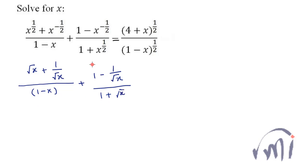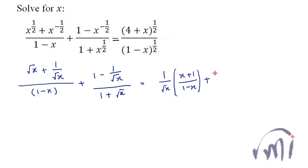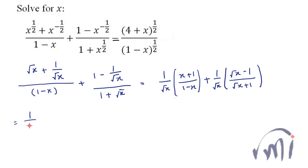So first I am going to simplify this term. This can be written as if I simplify the numerator, I'll get 1 by root x common and inside the bracket I can write x plus 1, divided by 1 minus x. Then we have this plus sign, and now we'll solve the numerator over here, so we'll get 1 divided by root x common and inside the bracket I'll have root x minus 1, divided by root x plus 1.